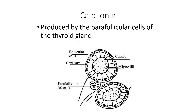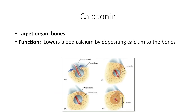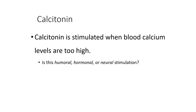Let's now switch gears and talk about the last hormone on page nine: calcitonin. Calcitonin is produced by the parafollicular cells, and the name calcitonin has a built-in clue. This particular hormone lowers blood calcium by depositing excess blood calcium into the bones. Having too much blood calcium can be bad for your heart and muscles, so it's critical that this hormone removes extra calcium and puts it into your bones where they can grow. Calcitonin is stimulated when blood calcium levels are too high — a great example of humoral stimulation.